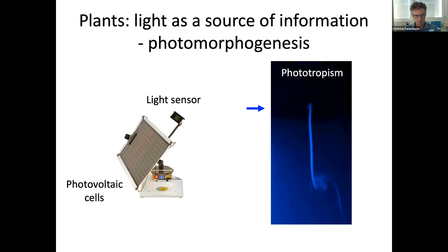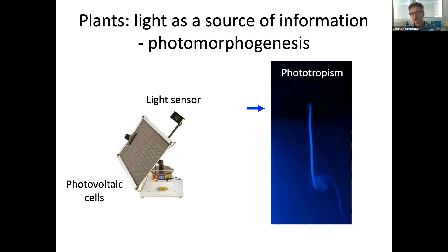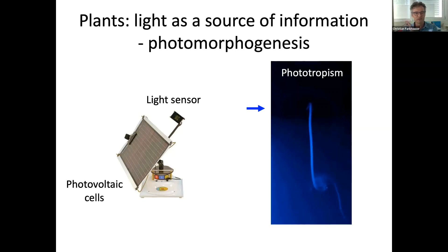This is illustrated in a little movie where a dark-grown seedling was suddenly illuminated with blue light coming from the side. You can see that this reorients the growth of the seedling — a phenomenon known as phototropism. Taking my analogy with solar panels: some solar panels are equipped with a light sensor allowing them to follow the sun across the sky and reorient. That's pretty much exactly what plant photoreceptors do — they allow optimization of photosynthesis. That's one of their key functions, and they do a number of other things I'll briefly touch upon.